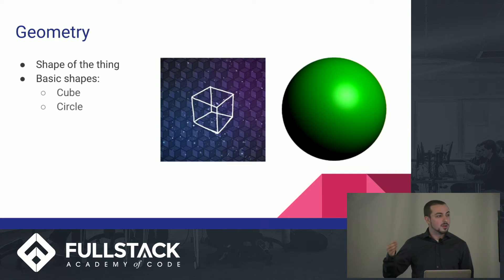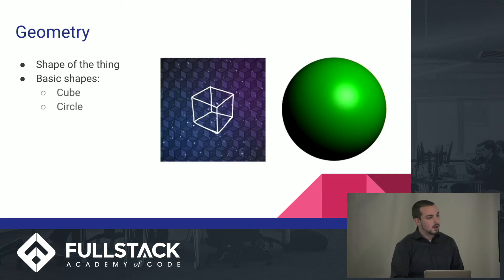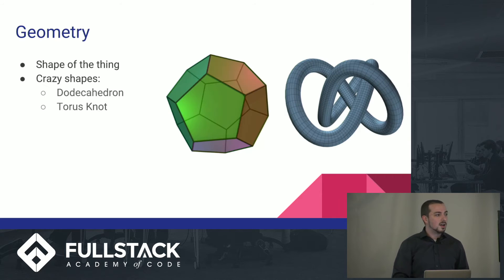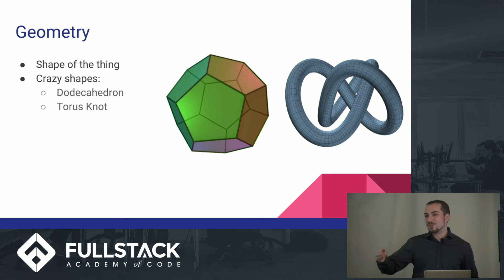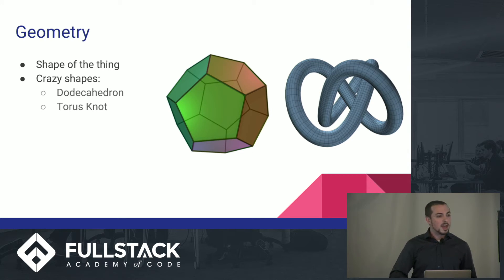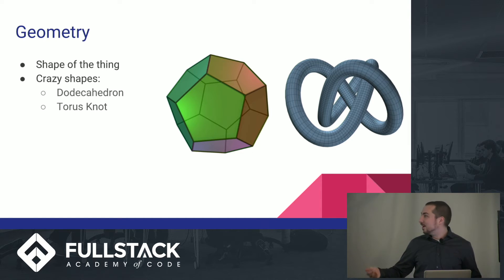Geometry can be very basic — cube, sphere. There are a little more complicated ones too. Dodecahedron — all of the Dungeons & Dragons die shapes are implemented in the properties of Three.js that you can call. And then there's a Torus Knot. I don't really know when you would use that, but it's there if you do want to use it.